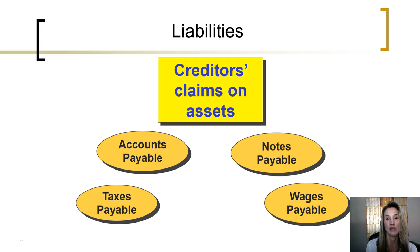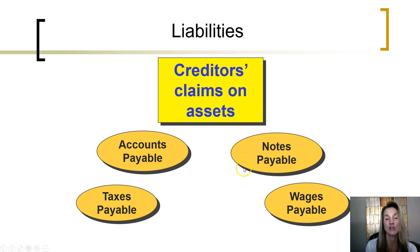Jumping to the other side of the equation, we can see the liabilities, or creditors' claim on the assets of the company. Those claims can represent accounts payable — if the company purchases something on credit, the company must pay for that purchase at some point in the future. Notes payable are similar to accounts payable; however, notes payable reflect an amount the company owes in the future, with a promissory note stating they will pay both the amounts owed and a stated rate of interest.